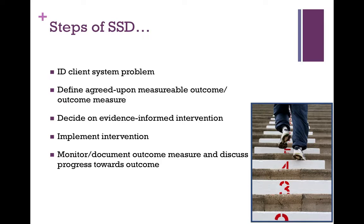There are several steps of single systems design. The first thing is to identify the problem — try to be very specific. If you find yourself getting too wordy or guessing, it will be harder to nail down a specific design, the measures you're going to use, and the outcomes you want. You want to work with your client system to decide on agreed-upon measurable outcomes: what is the goal, how are you going to measure change, how often will you measure change, and how will you operationalize those variables.